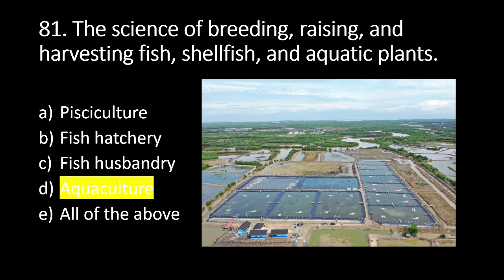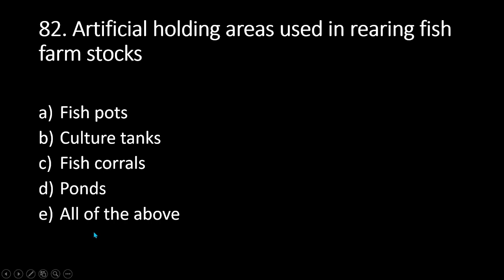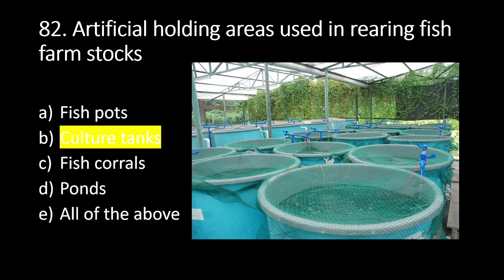Number 82: this refers to artificial holding areas used in rearing fish farm stocks. A. Fish pots, B. Culture tanks, C. Fish corrals, D. Ponds, E. All of the above. The answer is B. Culture tanks. Culture tanks are artificial holding areas used in rearing fish farm stocks.